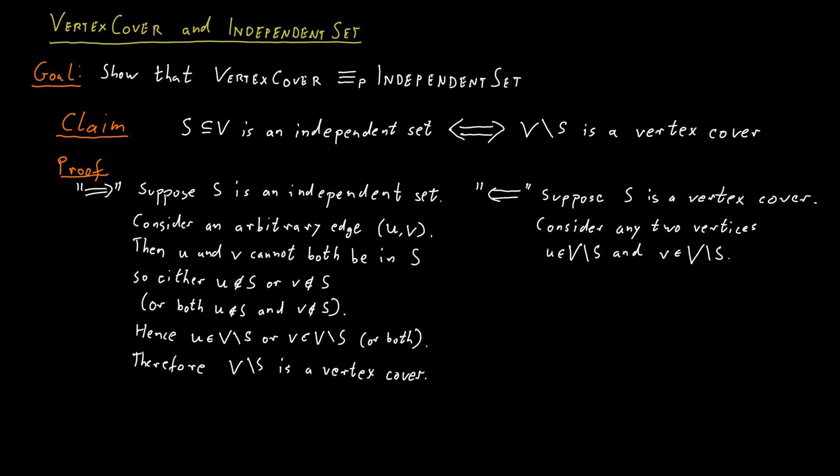Since S is a vertex cover, (U, V) cannot be an edge in the graph—otherwise that edge would not be covered, as neither endpoint is in S. Therefore, any pair of vertices in V minus S are not connected by an edge. Thus, V minus S is an independent set by definition.